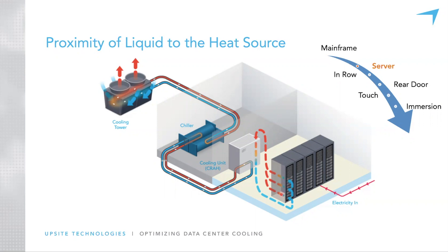With air cooling, air is the first loop — it picks up the heat from the source and carries it to a perimeter cooling unit, such as a CRAC unit with a chilled water loop or a CRAC air conditioner with a refrigerant cycle. The perimeter cooling units pick up the heat from the air, pass it into a liquid, and that liquid carries it away — either directly outdoors via a compressor-based system, or to a chiller and then to condenser water and out to the cooling tower.